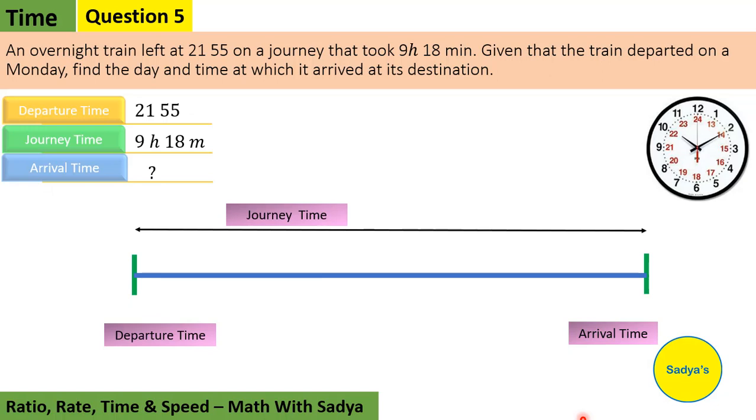The question is: An overnight train left at 2155 on a journey that took 9 hours and 18 minutes. Given that the train departed on a Monday, find the day and time at which it arrived at its destination.